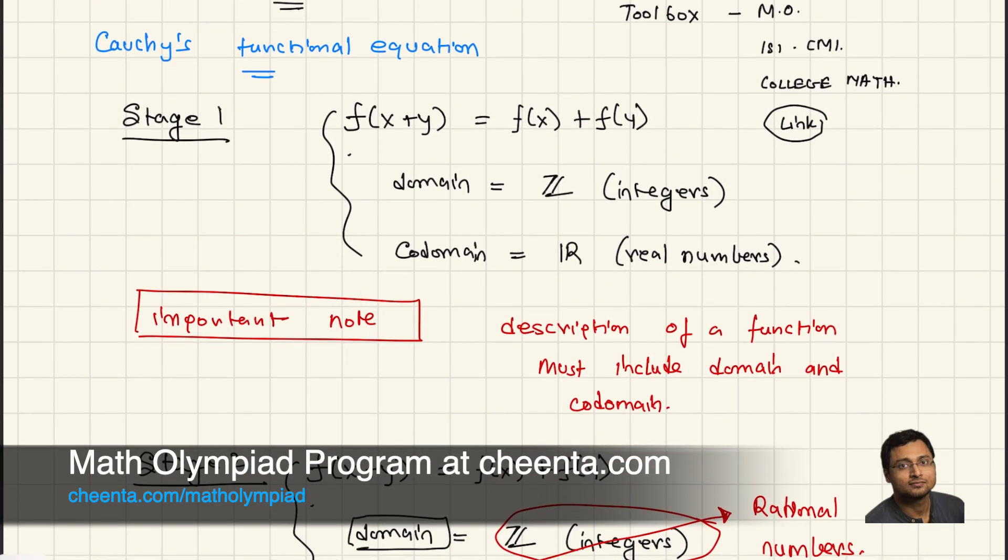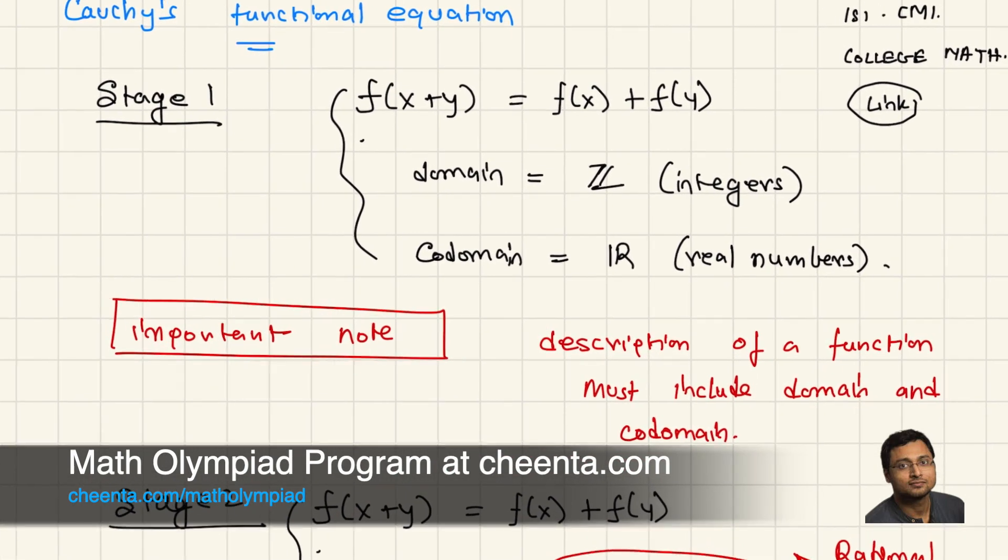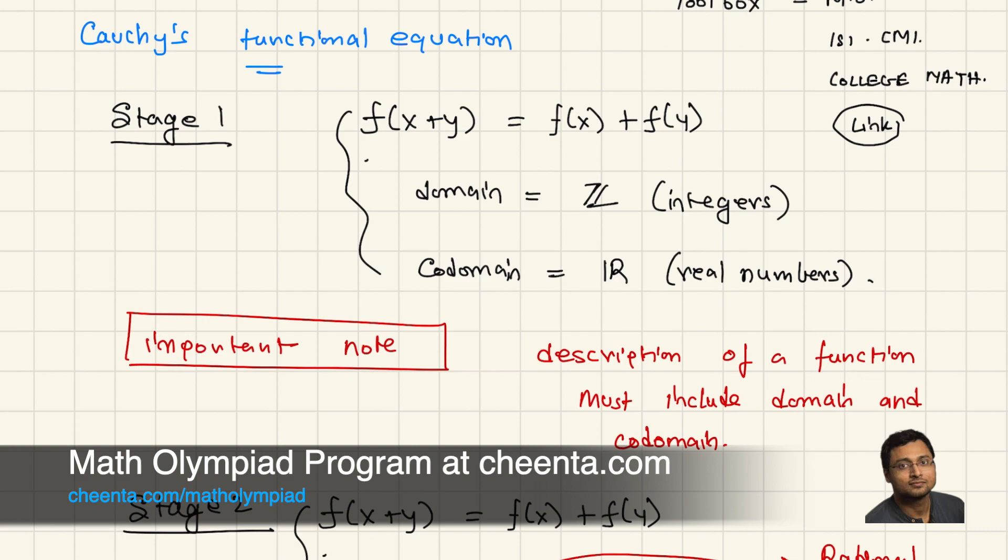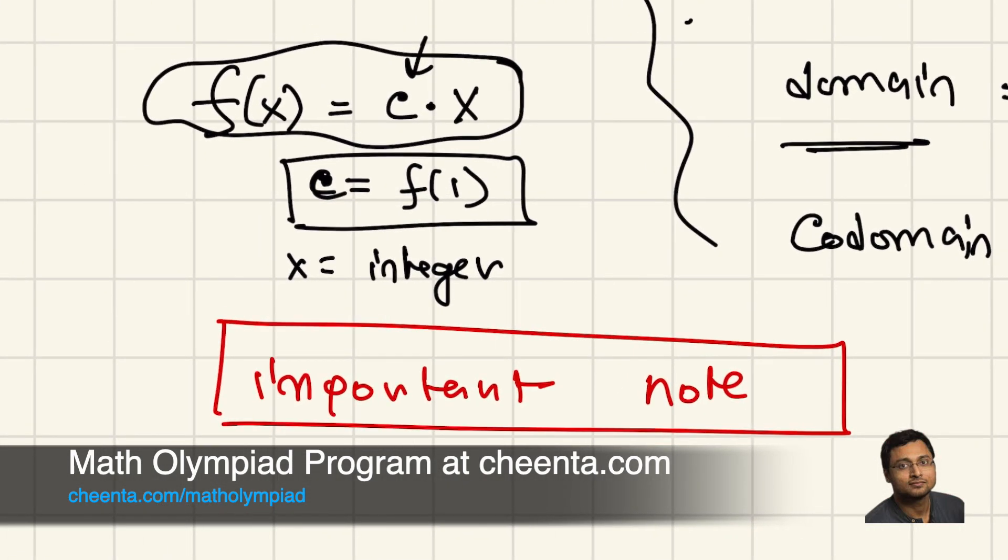Now, in the previous video, we saw what is the answer when the domain is integers. It was f(x) equals to constant times x. Right? The constant is the value of f(1). When x is equal to integer. This we already found in part one of the video.